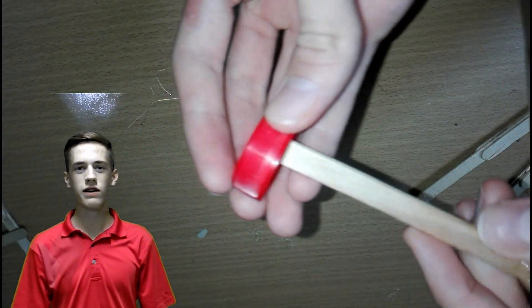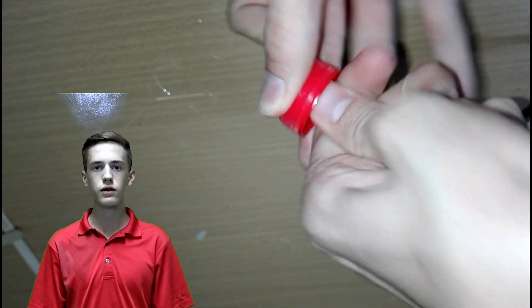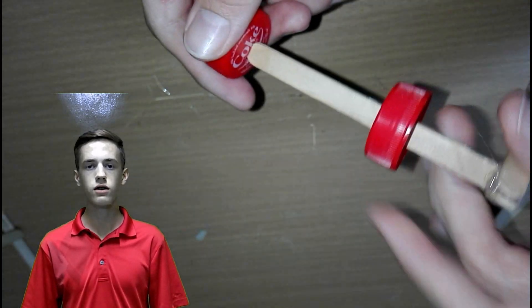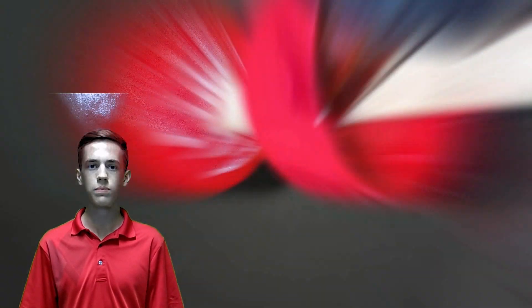Next, cut a small hole in the center of two bottle caps, then slide a popsicle stick through the two bottle caps and glue the bottle caps together in the center of the popsicle stick. Then glue that popsicle stick onto the top of the two triangles that we made.